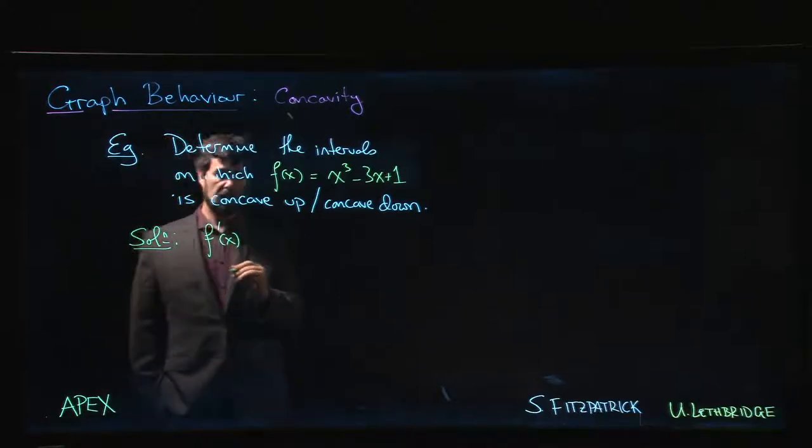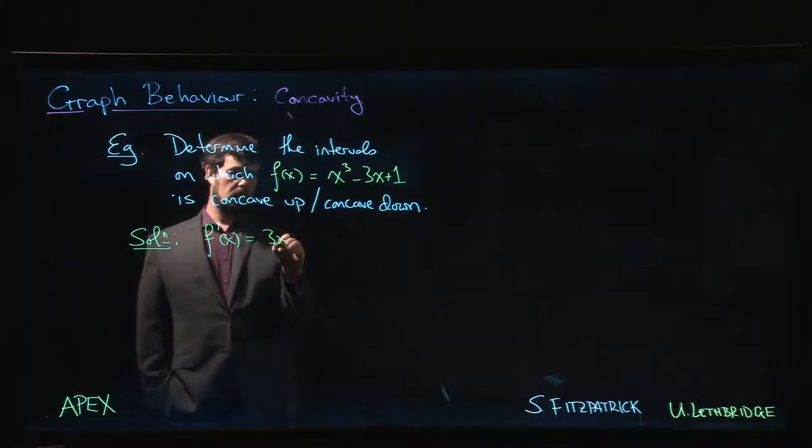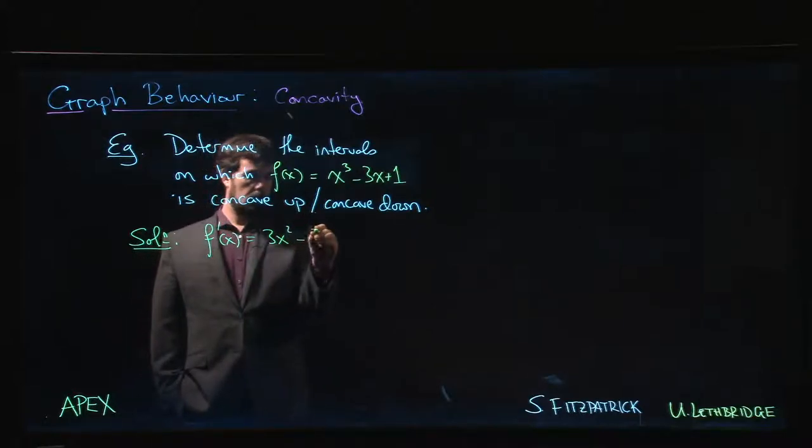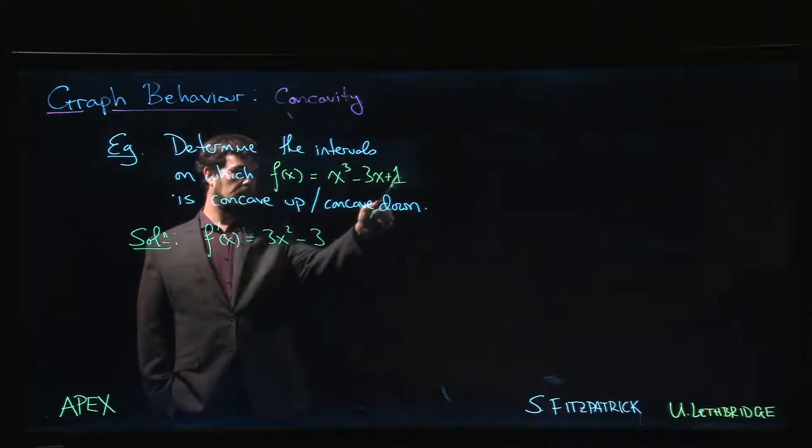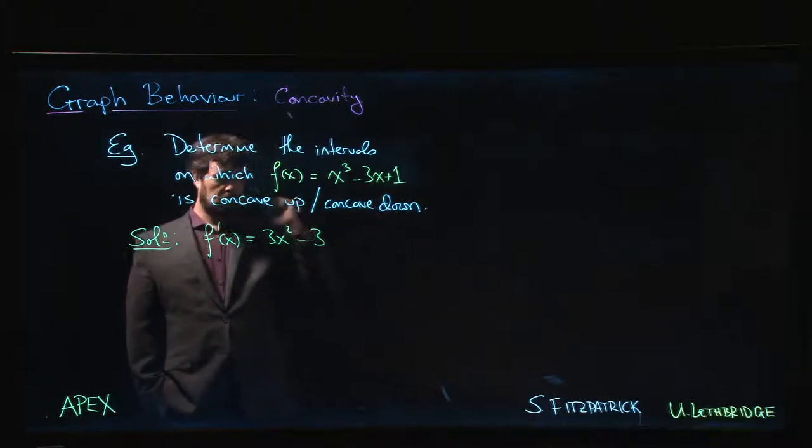Calculate f prime first. So f prime of x will be 3x² minus 3. The derivative of 1 is 0, it's a constant.